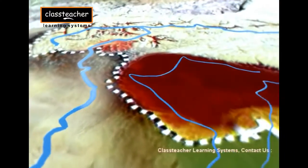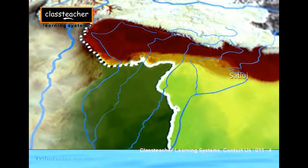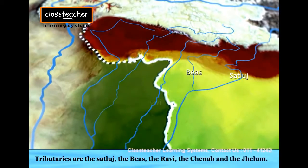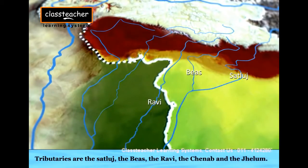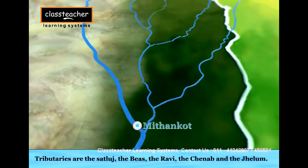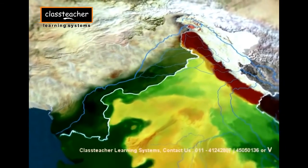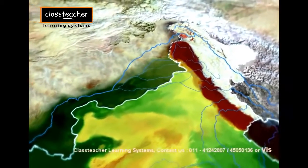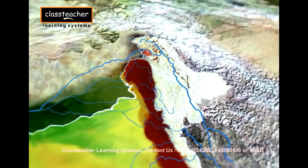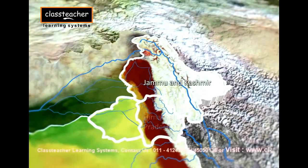The river flows southward and is joined by the Satlaj, the Beas, the Ravi, the Chenab, and the Jhelum near Mithankot. It finally discharges into the Arabian Sea. A little over a third of the Indus basin is located in India, in the states of Jammu and Kashmir, Himachal Pradesh, and Punjab.